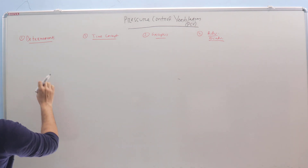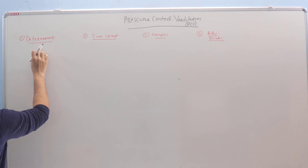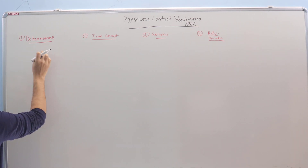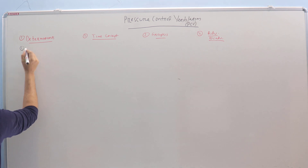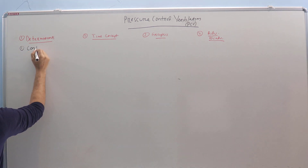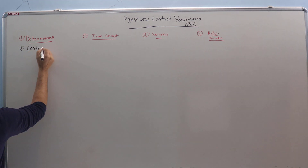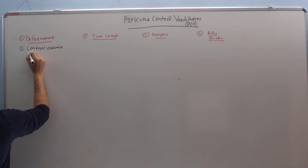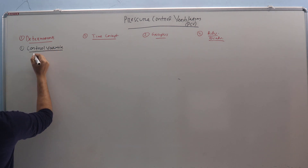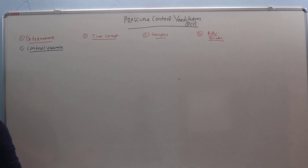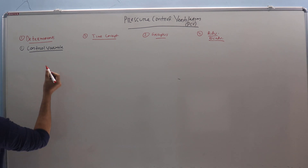In the beginning, under the Determinants section, we will have four headings. The first one will be Control Variable. What is the Control Variable? As the name suggests, it is the Pressure.